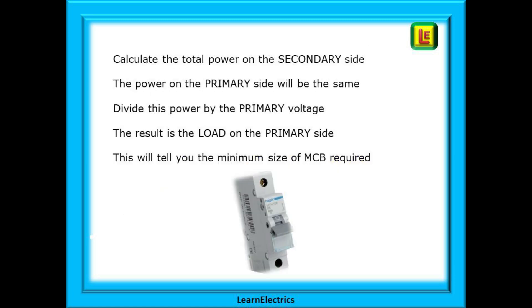And lastly, we showed that if we can calculate the total power on the secondary side, the power on the primary side will be the same. Now, divide this power by the primary voltage, and the result is the load on the primary side. And this will tell you the minimum size of MCB required. And that is all there is to it.